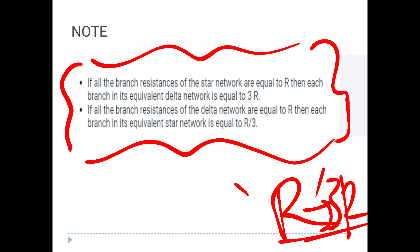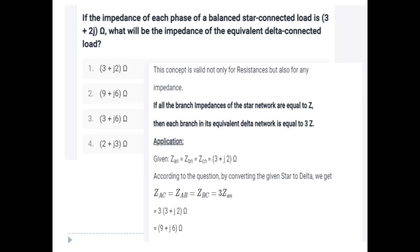If the impedance of each phase of a balanced star network is 3 plus j2 Ohm, what will be the impedance of the equivalent delta connected load? Using the concept that each branch in the equivalent delta is equal to 3Z: delta impedance equals 3 times (3 plus j2) equals 9 plus j6 Ohm.